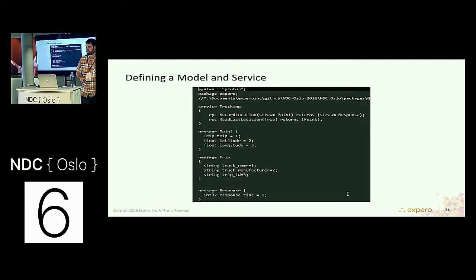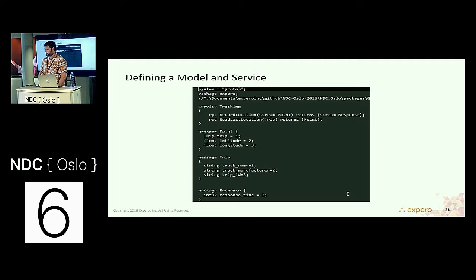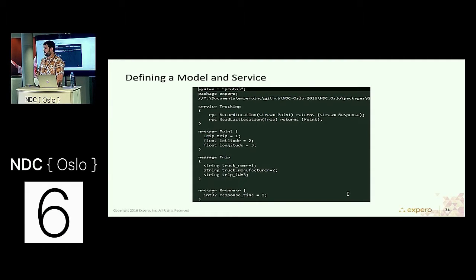The first step is to define the model and service using protocol buffers. In this case, you have a service called Trucking with two different endpoints: one called Record Location and the other called Read Last Location. Read Last Location takes in a Trip object and returns a Point object — it reads the last location stored in the system. Record Location is where it gets interesting: it takes a stream of Points and returns a stream of responses. This is an example of how you set up that bidirectional streaming functionality in gRPC. With protocol buffers, you're also able to build out complex domain objects and transmit them back and forth across the wire.